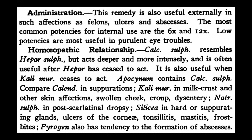So the stages are: first stage — Ferrum phos; second stage — Kali mur; third stage — Calcarea sulph; followed by Kali sulph, then Silicea. Schüssler also notes that Apocyanum itself contains Calcarea sulph. Compare Calcarea sulph with Calendula in suppurations, because Calendula acts locally in wounds. You can apply Calendula locally, and if there is suppuration, give Calcarea sulph internally — it works really well.